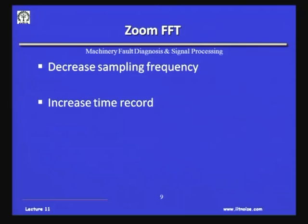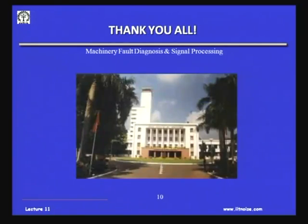We will see the applications of FFT in subsequent classes. This was the basics of FFT: how to avoid errors — particularly inadequate frequency resolution and leakage effects of windowing — and the post-processing features useful for machinery condition monitoring. To achieve finer frequency details with available resources, either decrease the sampling frequency or increase the time record. If decreasing the sampling frequency is not possible, we must increase the time record. Thank you.